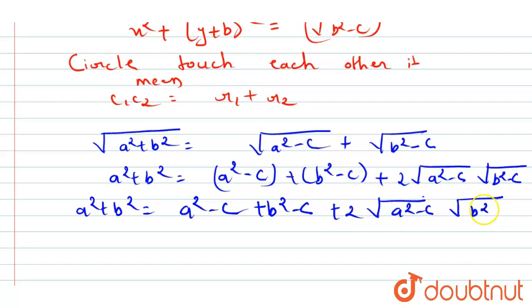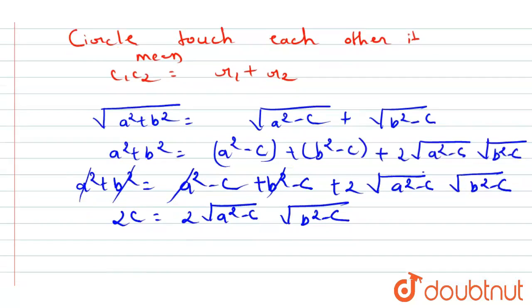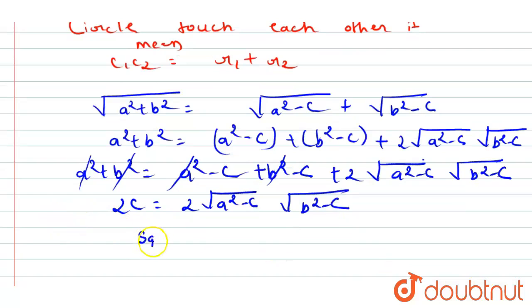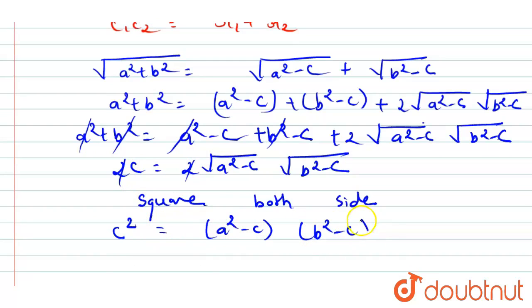The a² and b² terms cancel out, giving 2c = 2√(a² - c)·√(b² - c). Squaring both sides again, the 2s cancel and we get c² = (a² - c)(b² - c).